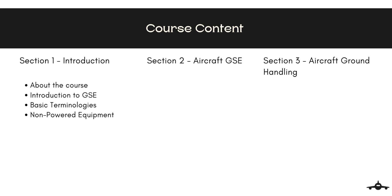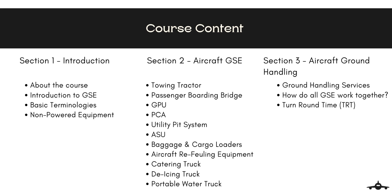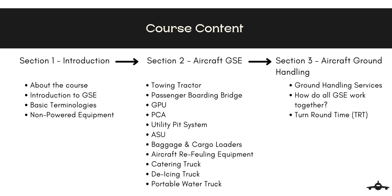We will begin with the introduction about the course, then an introduction to GSEs, then we will learn some basic terminologies, and lastly we will conclude the section with non-powered GSEs. We will further proceed to Section 2, which explains all of the powered equipment, understanding the operation of each equipment one by one. Finally, we will move on to Section 3, which comprises ground handling — referring to services provided to facilitate the aircraft flight and aircraft ground operations — and learn how all of these equipment come together to make the aircraft ready for the next flight. I would suggest you all to go through all the lectures as they are structured to get a better understanding of the aviation environment. We shall jump right into learning the basic terminologies required to understand the course in the next lecture.